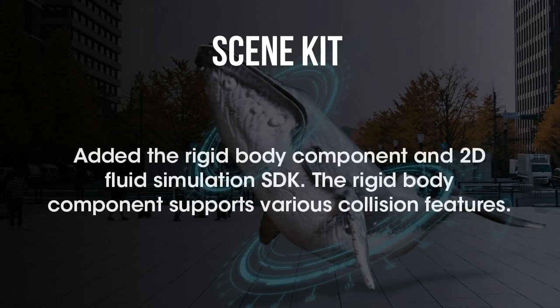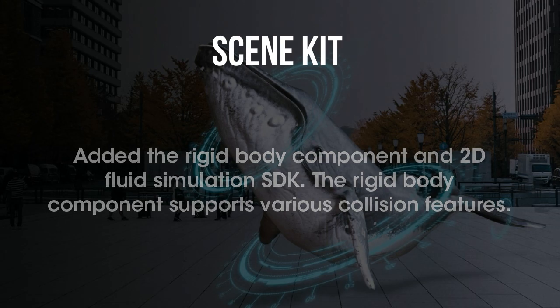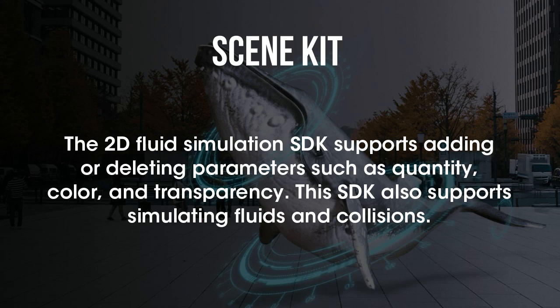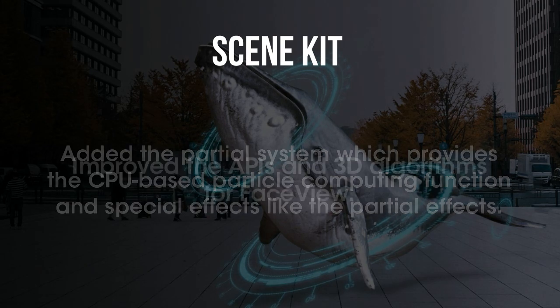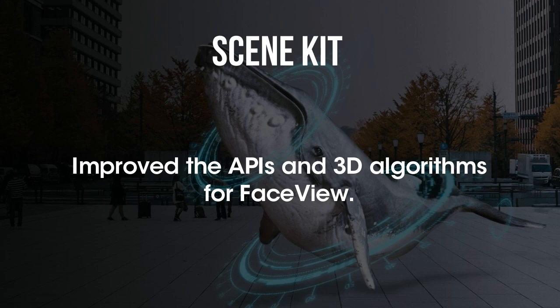Scene Kit added the Rigid Body Component and 2D Fluid Simulation SDK. The Rigid Body Component supports various collision features. The 2D Fluid Simulation SDK supports adding or deleting parameters such as quality, color, and transparency, and also supports simulating fluids and collision. Added the Particle System, which provides CPU-based particle computing functions and special effects. It also improved the APIs and 3D algorithms for face view.